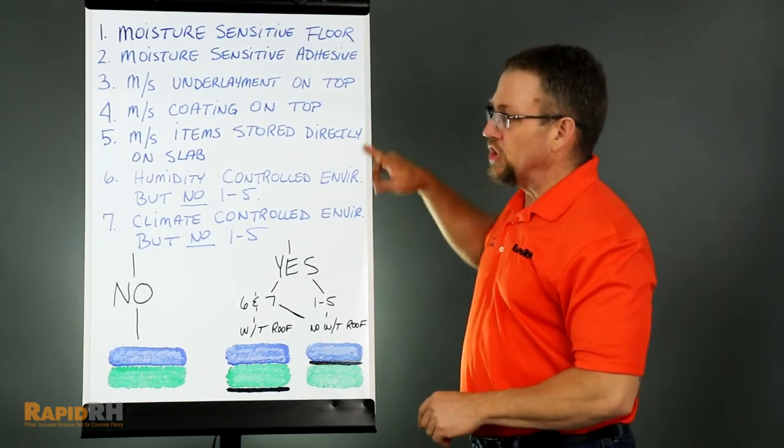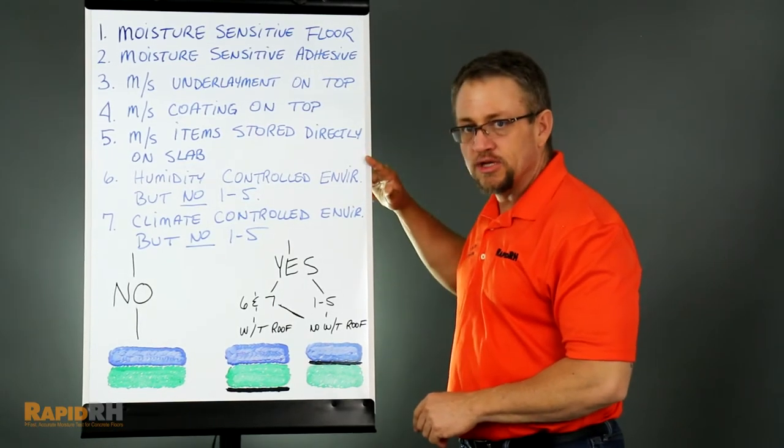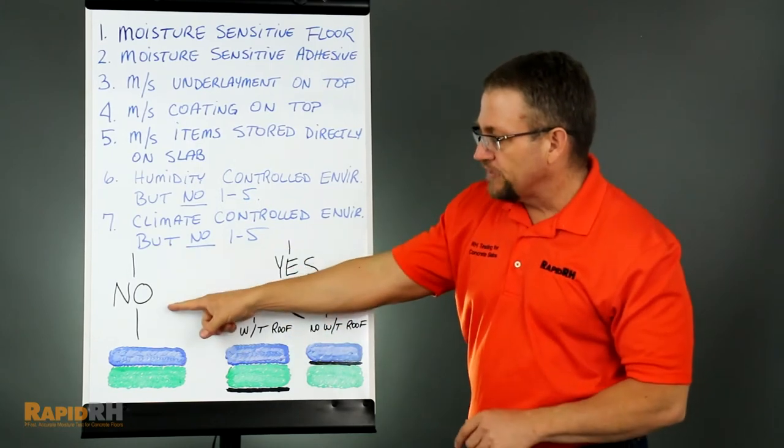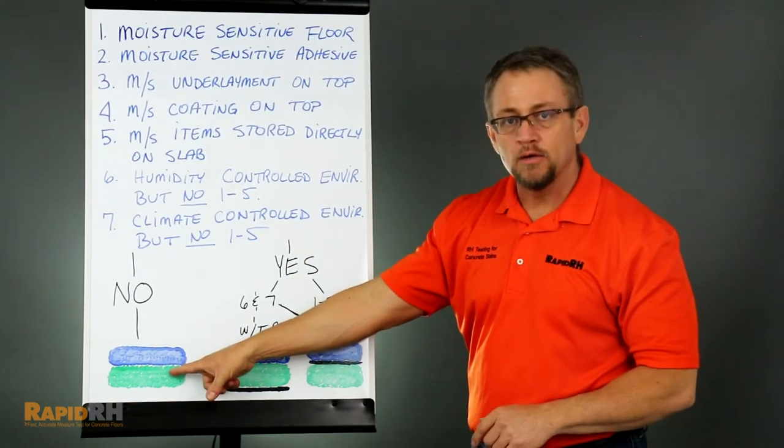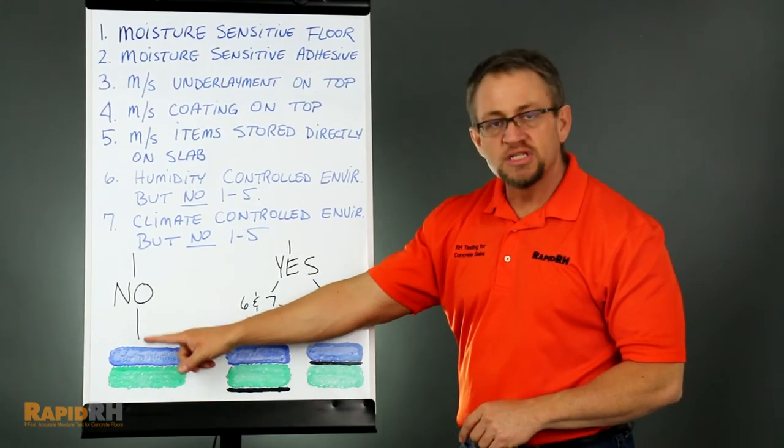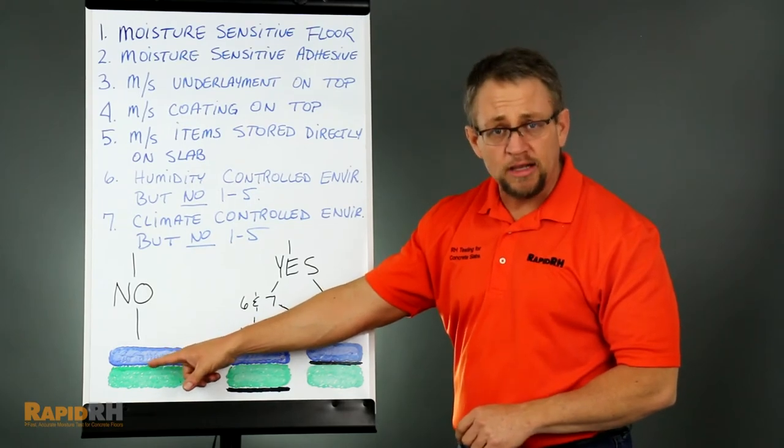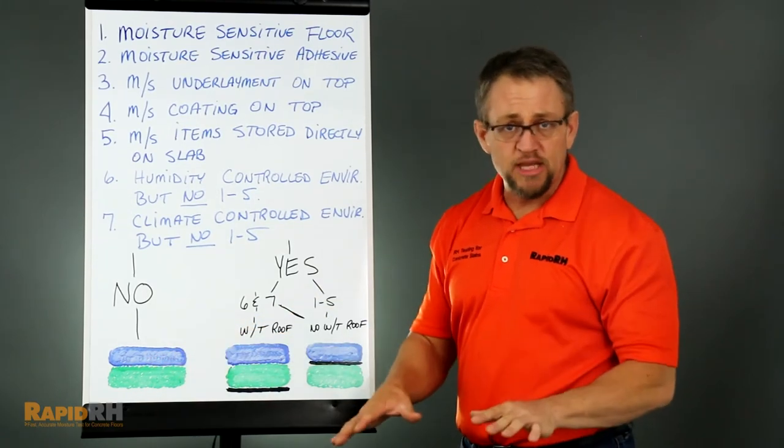So, if you answered no to all seven of these questions, you can go right down the flowchart to this spot here, where you have a sub-base, a concrete slab poured directly on top of it with no vapor retarder.